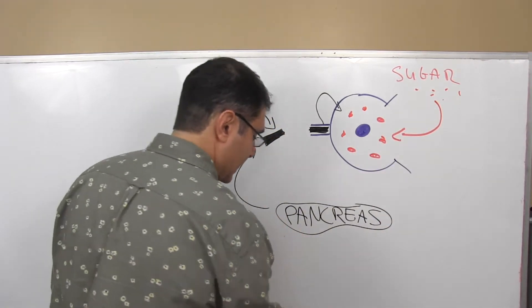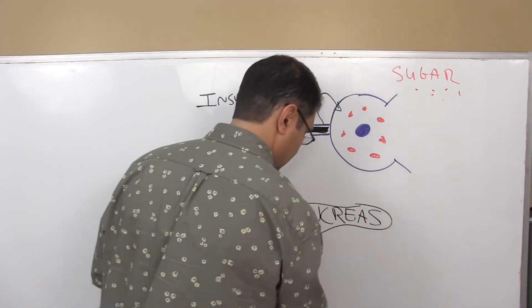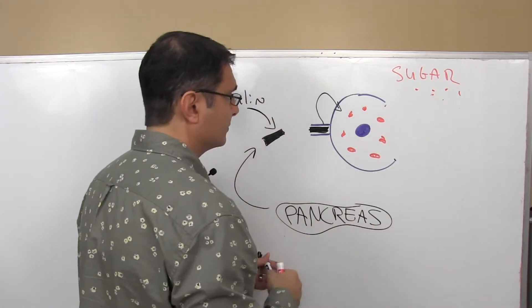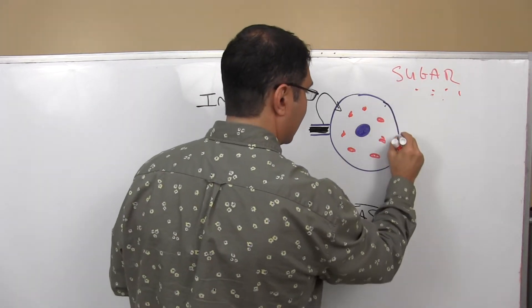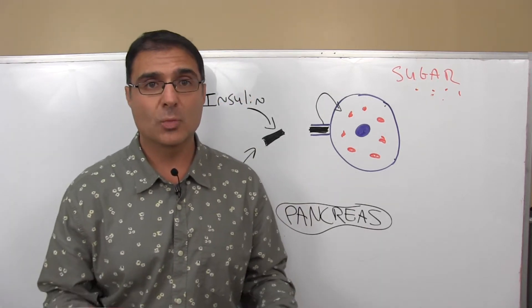Once the blood sugar is in the cell, then your body leaves some of it in the blood because we need to have some in the blood. And then our cell closes up. That's what's supposed to happen in a normal, healthy person.